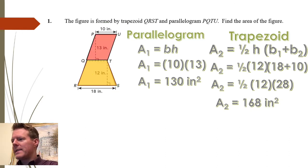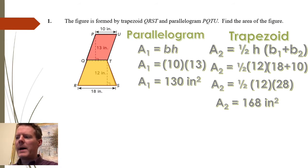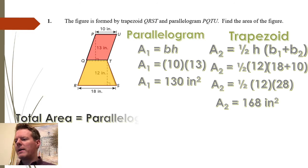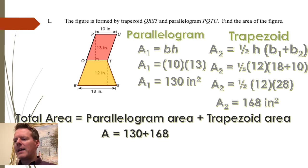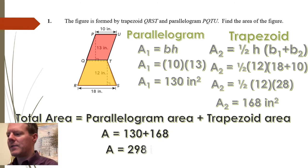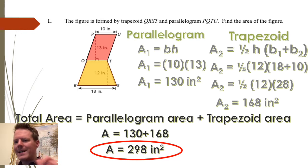Now that's not the final answer. We're looking for the area of the entire shape combined. So I'll add the two areas of the parallelogram and the trapezoid to get a final answer of 298 square inches for the complete figure. That's example number one.